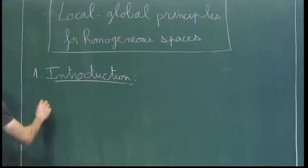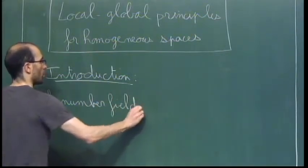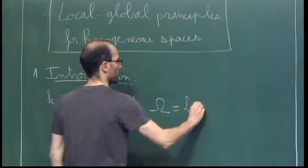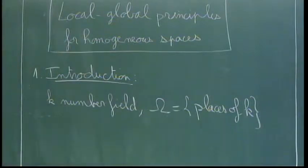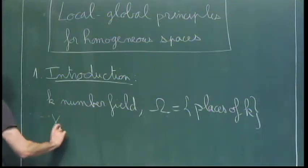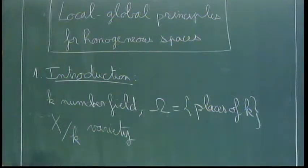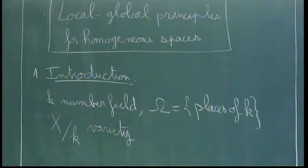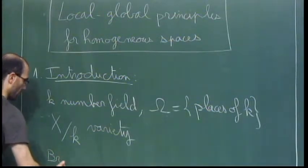In all this talk, k will be a number field. I will denote by Omega the set of places of k. Let x be a variety defined over k. I will need the Brauer group. I guess you all know what the Brauer group is — we already saw it — and I will just define the unramified Brauer group.